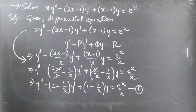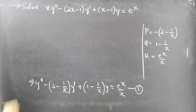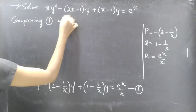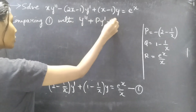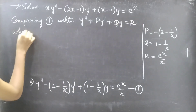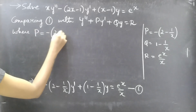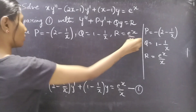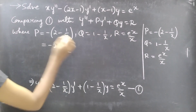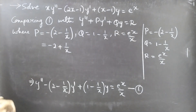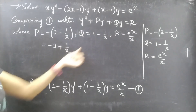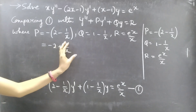Now we compare equation 1 with the standard form y'' + Py' + Qy = R. Comparing, we get P = −(2 − 1/x), Q = 1 − 1/x, and R = e^x/x. Simplifying, P = −2 + 1/x.